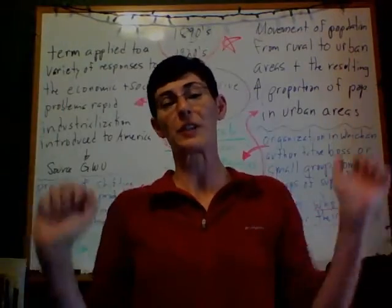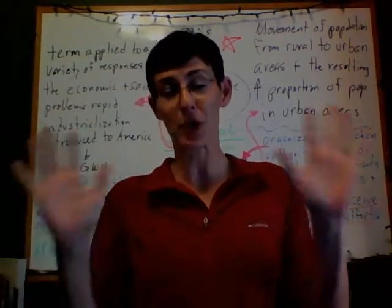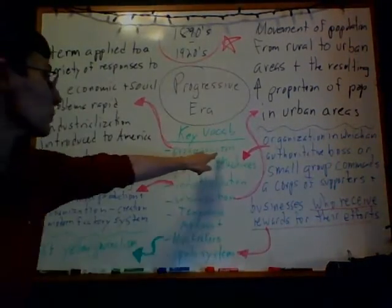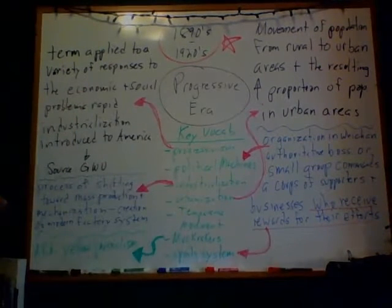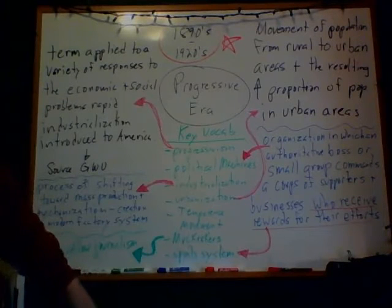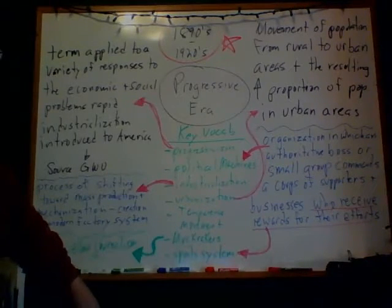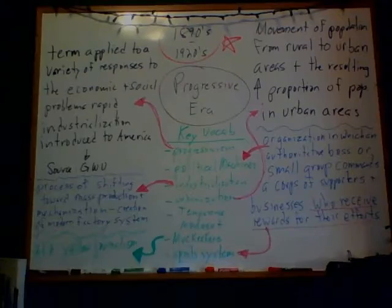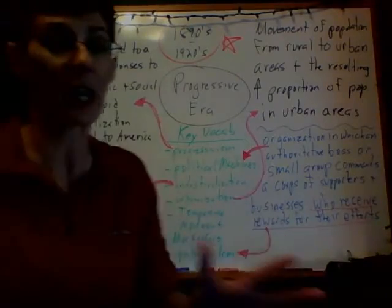Let's start with a definition of progressivism. Progressivism is a term applied to a variety of responses to the economic and social problems rapid industrialization introduced to America. That definition comes from George Washington University — it's a pretty good one.